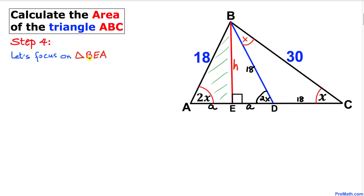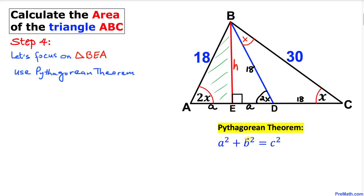Now let's focus on triangle BEA — it's a right triangle, so we'll use the Pythagorean theorem: A² + B² = C². I'll call segment AE 'A', the perpendicular height 'H', and the hypotenuse 18 is 'C'.